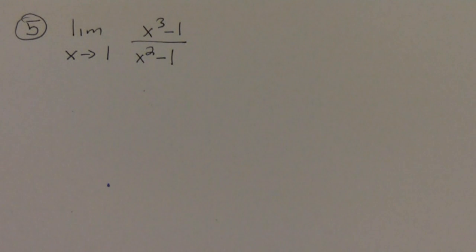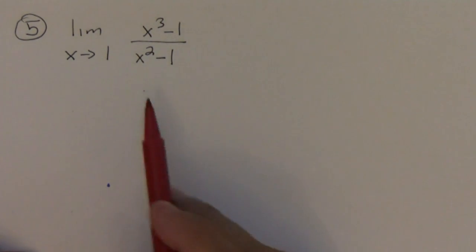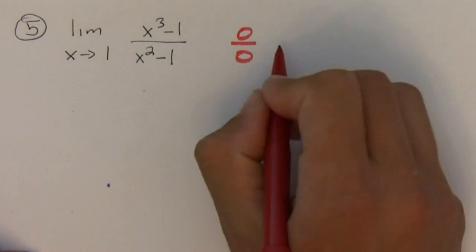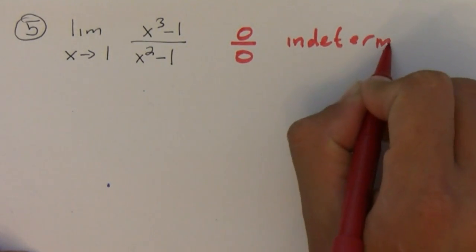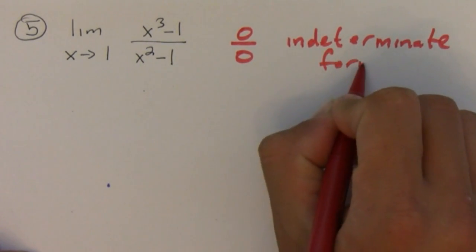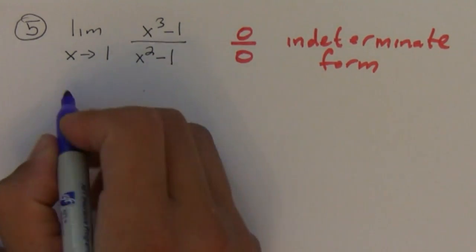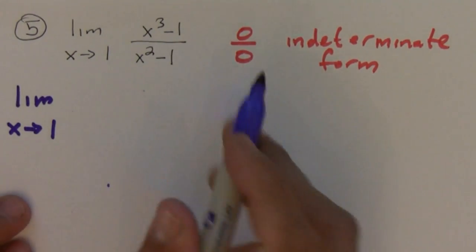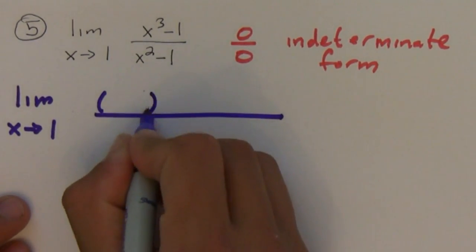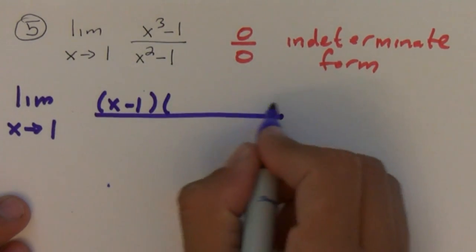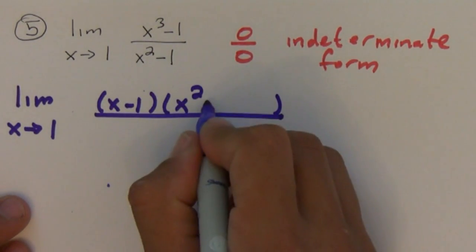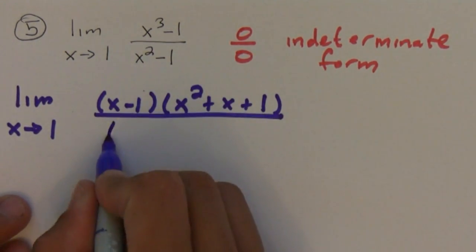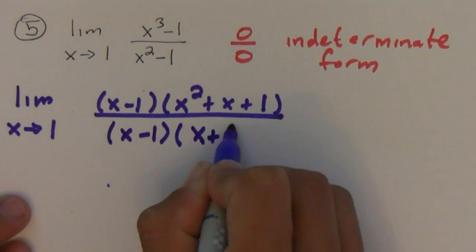To find this limit, the first thing you do is try to plug in the value. If I plug in 1 I get 0 over 0 — an indeterminate form — so I should try some algebra. On top I have a difference of cubes, which factors into x minus 1 times x squared plus x plus 1. On the bottom I have a difference of squares, which factors into x minus 1 times x plus 1.